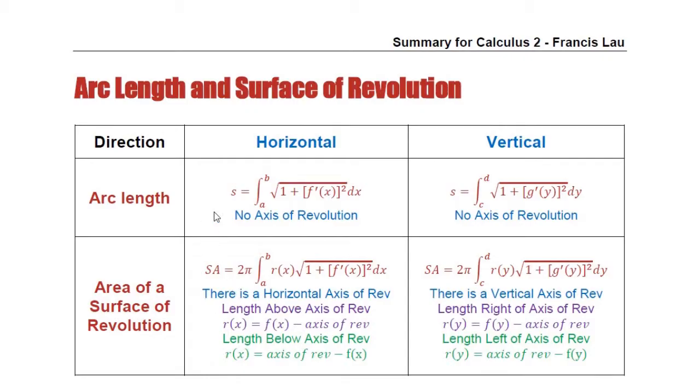Now, what is arc length? Arc length, all you need to do is follow this formula. The arc length is basically the integral from A to B. There's no axis of revolution in this case. The square root of 1 plus f prime of x squared. So we just need to apply this formula to find arc length.